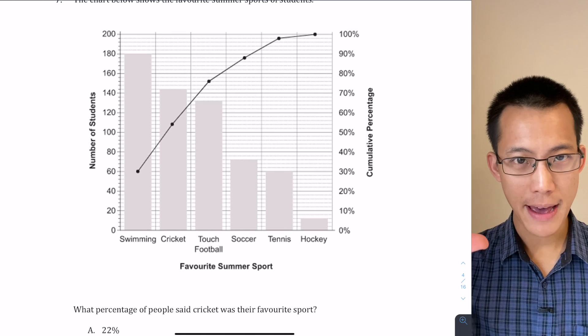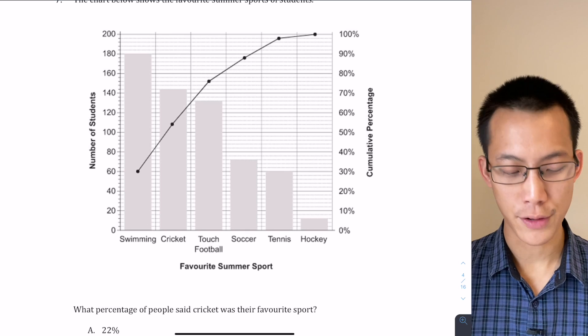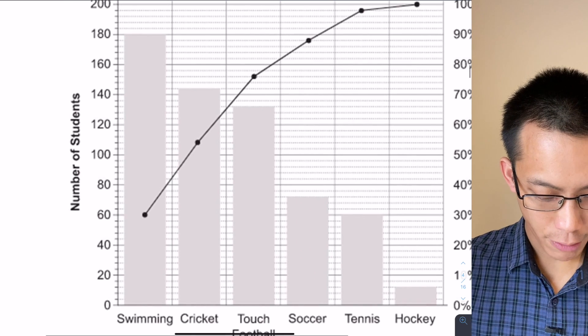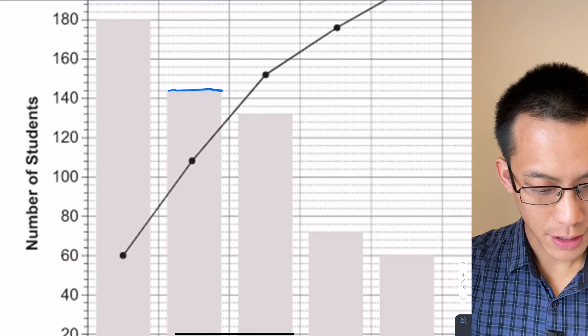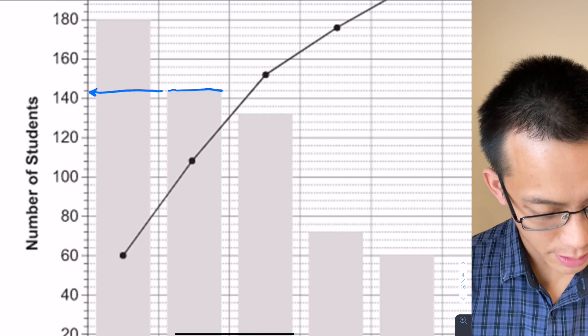So what is the long way? Well, a percentage of people is usually that amount divided by the total—this is the percentage of people who said cricket was their favorite sport. Now, the graph tells us, if we zoom in a bit closer, cricket is the second bar here, and you can see if you read off to the left, from 140 to 160, there's one, two, three, four, five marks.